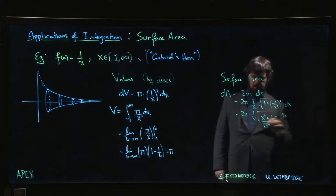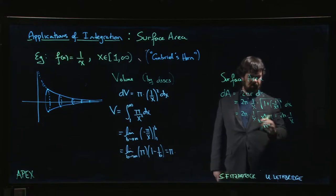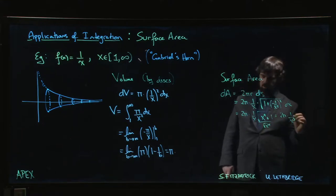Let's clean that all up. We have 2π times 1 over x. That's going to give me an x², so I guess I have 1 over x³, and then I have the square root of x⁴ + 1.